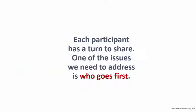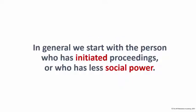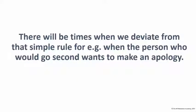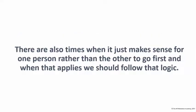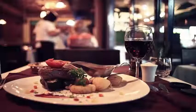Each participant has a turn to share. One of the issues we need to address is who goes first. In general, we start with the person who has initiated proceedings or who has less social power. However, there will be times when we deviate from that simple rule — for example, when the person who would go second wants to make an apology. There are also times when it makes sense for one person rather than the other to go first, and when that applies we should follow that logic.